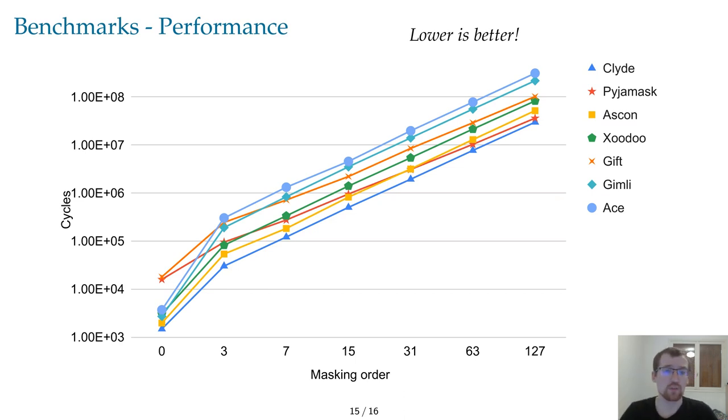At order 3, performance are between 30,000 and 300,000 cycles. At order 31, between 500,000 and 4.5 million cycles. And finally, at order 127, between 30 million and 300 million cycles. Tornado can thus reach very high masking order with decent performance.